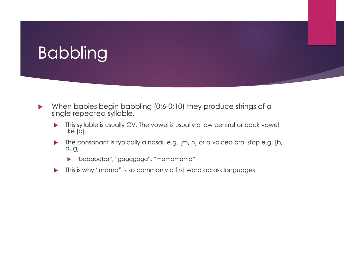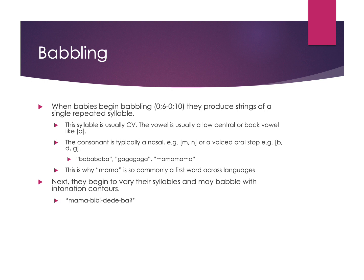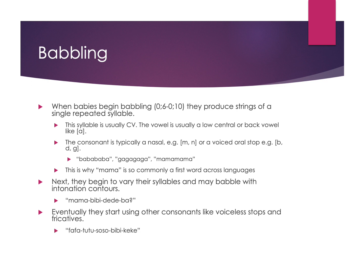You'll then start to see some varying syllables and different intonational contours, where different vowels are introduced and different consonants are used — more than one in a single string of sounds. Over time you'll see other consonants and vowels being used, adding in things like voiceless stops and fricatives first, and eventually some of those other sounds after that. So you start getting things like fa-fa, tu-tu, so-so — a mix of consonants and vowels put together in different babbling strings before we get into actual word development.